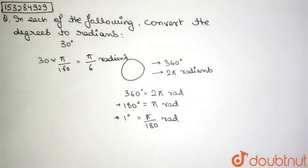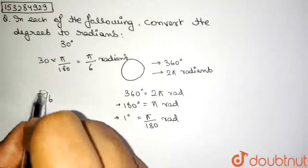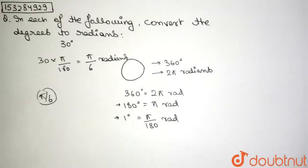So, for this question, the answer is π by 6 radians. So, 30 degrees is equal to π by 6 radians. That's it, guys. Thank you for watching.